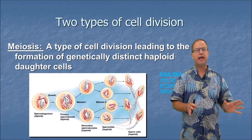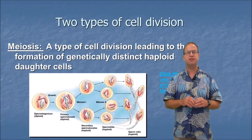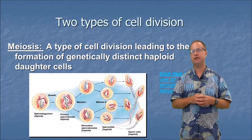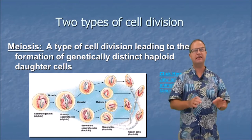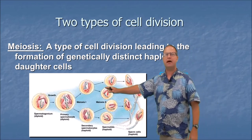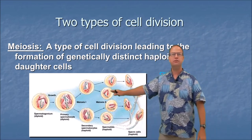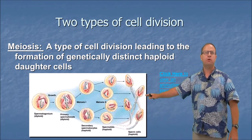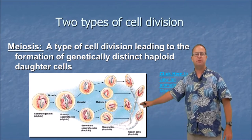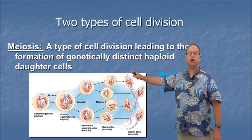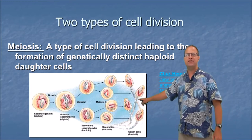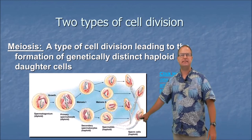Meiosis, on the other hand, is a type of cell division that leads to the formation of genetically distinct haploid daughter cells. One spermatogonium undergoes two sets of division to become four spermatozoa. These spermatozoa have half the number of chromosomes of the parent cell, and each one is genetically distinct.